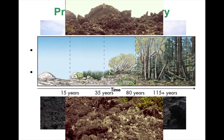This is a timeline of what you might see in primary succession. It can take upwards of 15 years before you really start to see those pioneer species showing up — it could be a long time of just rock. By about 35 years you've got some grasses available. By 80 years you have some small woody plants like bushes and shrubs. It's not until you get outside of 80 years that you start to see actual forests show up. It can take 115 plus years to reach climax community through primary succession.